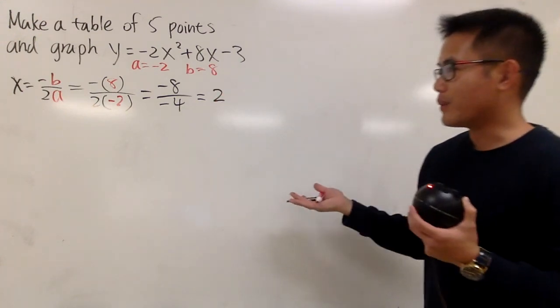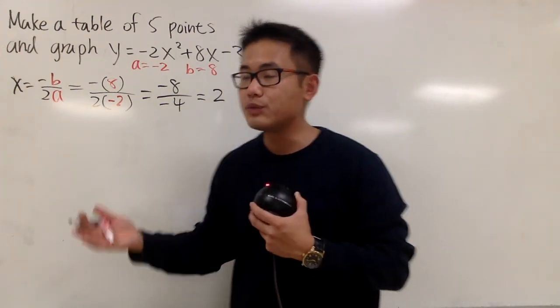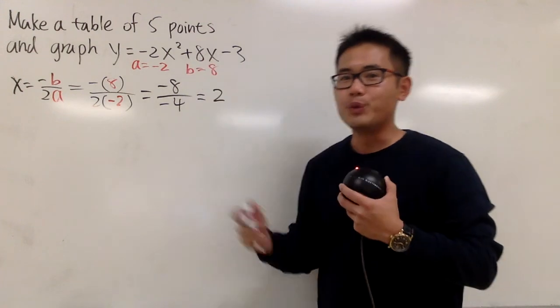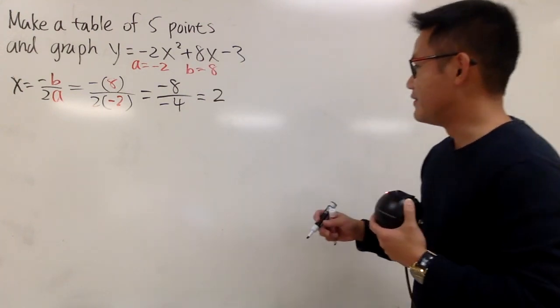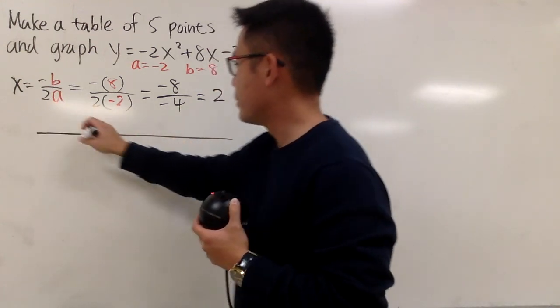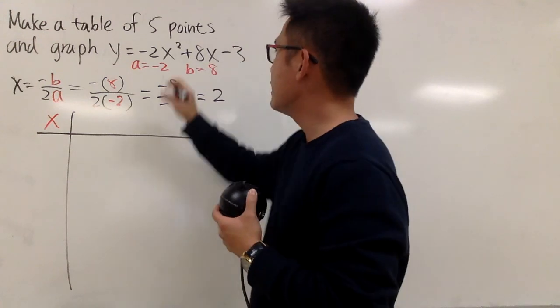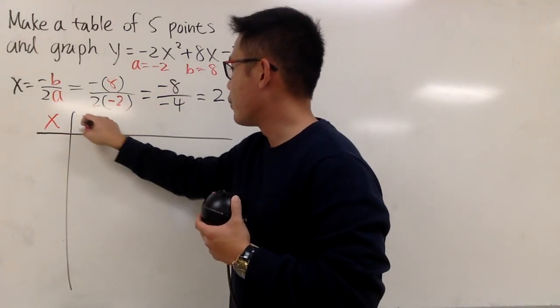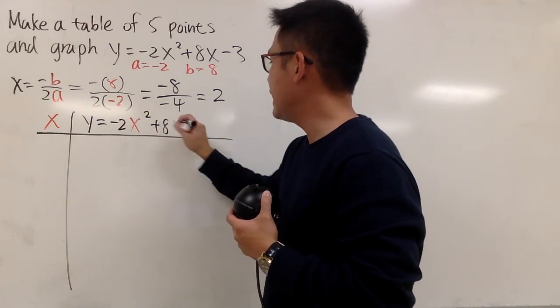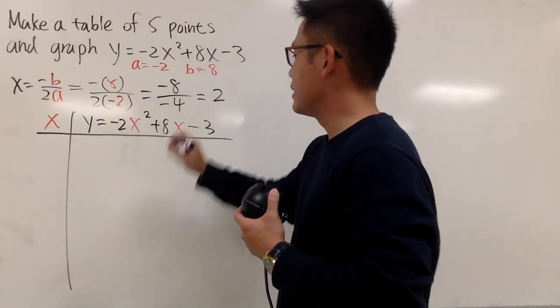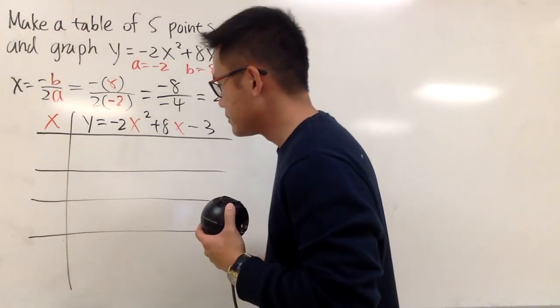So this is the work that we do. And now, usually we also have to get the y value. But since we are making a table of five points, we will have the x and y values on the table already. So let me just leave that and I'm just going to put down the table right here.